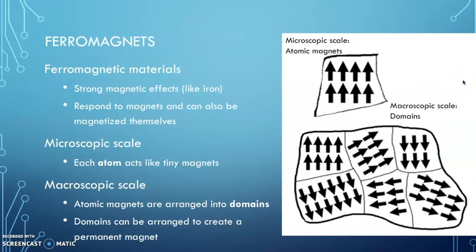So on the microscopic scale, it means that even the little tiny atoms in the ferromagnetic material actually act like these small magnets. So picture tiny little atoms and they all have magnetic properties with their own north and south poles like you guys saw on the slide before.